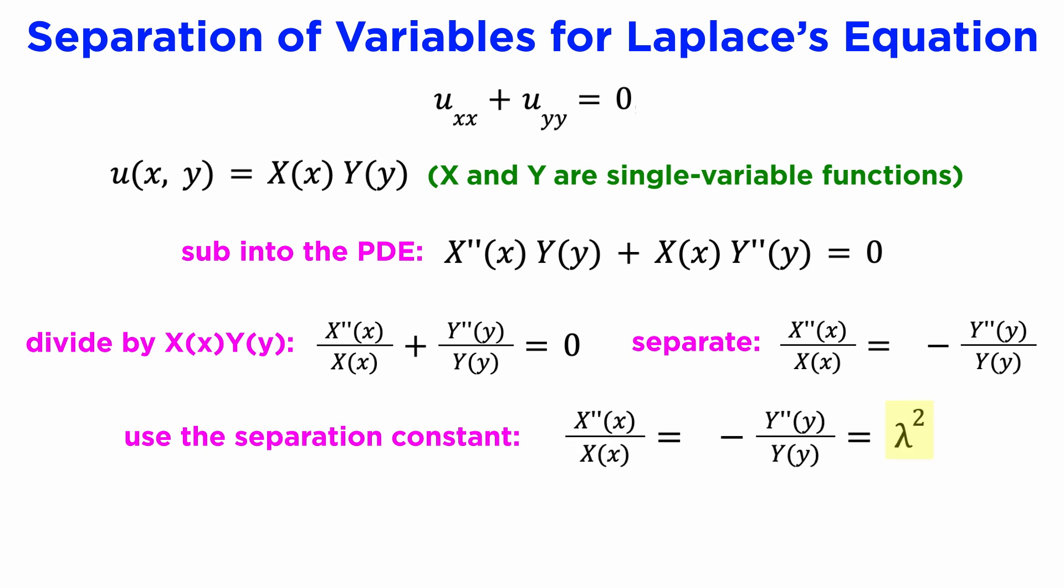This time, we'll stick with the positive lambda squared and see where it takes us. We can then set each side equal to this lambda squared constant, and we will get two different second order ODEs, one for x and one for y.